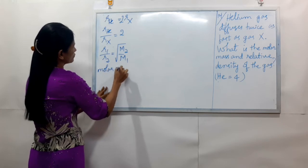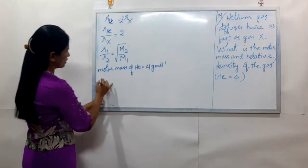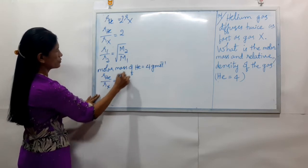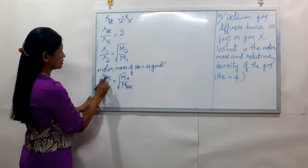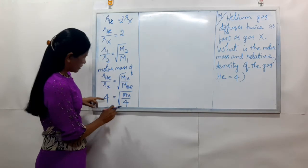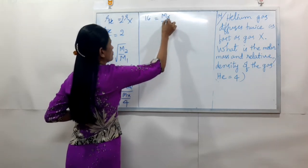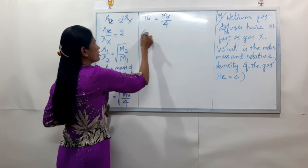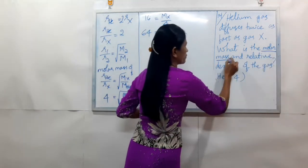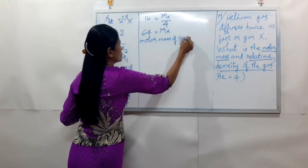Helium equals 4 grams per mole. R1 is R_He, R2 is R_X equals square root of M_X by M_He. We have 4, equal to M_X by 4. Now square both sides. The answer is 64 is equal to M_X. So the molecular mass is 64.